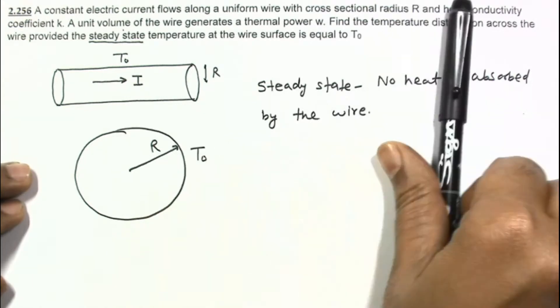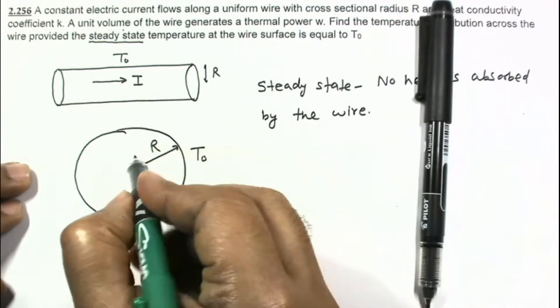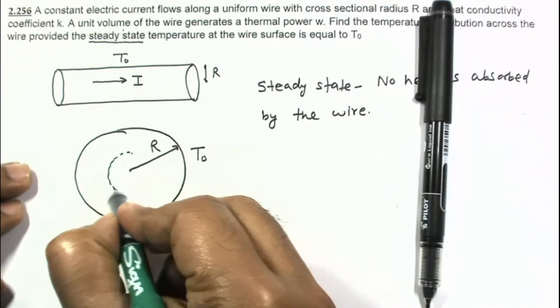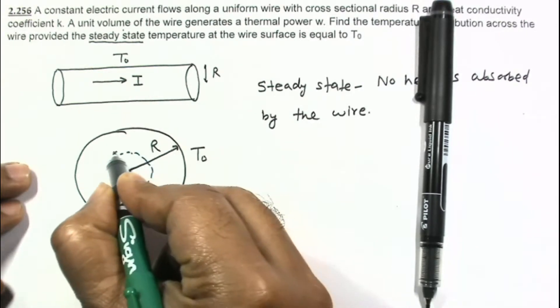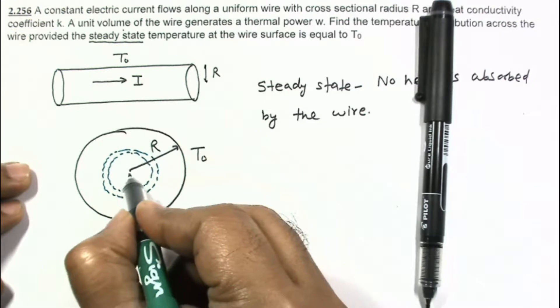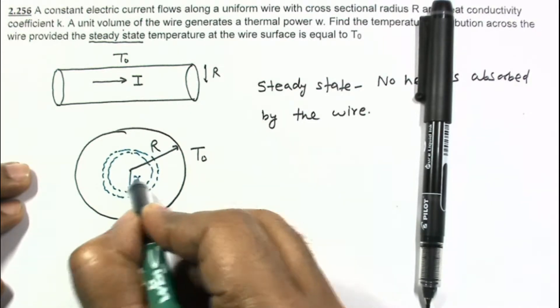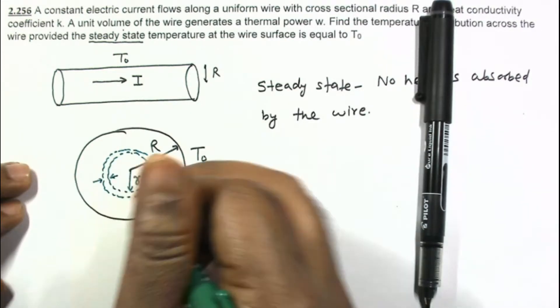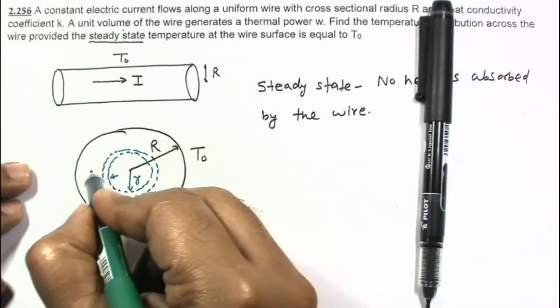Let us take an element. I am taking an element like this. This is a cylindrical shell. Cylindrical shell of radius r and thickness dr.